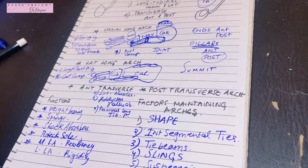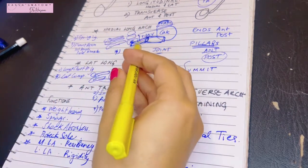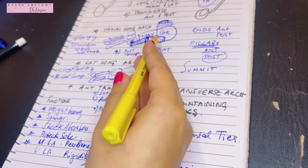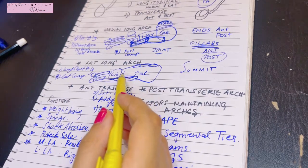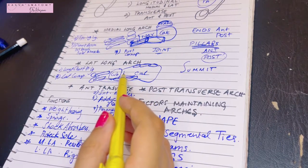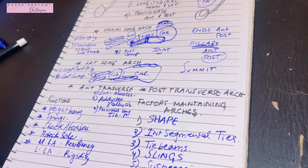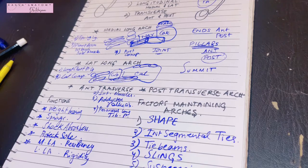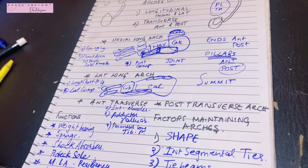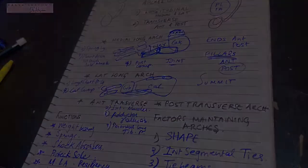The suspension of the medial longitudinal arch is formed by tibialis anterior, and the suspension of the lateral longitudinal arch is formed by peroneus longus. These were the maintaining factors of the arches. In the next video, I'll discuss the clinical aspects of the arches of the foot. Thank you so much for watching.